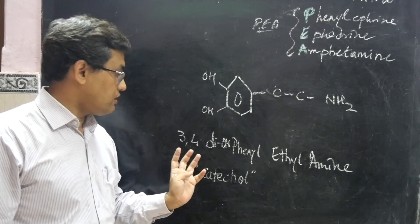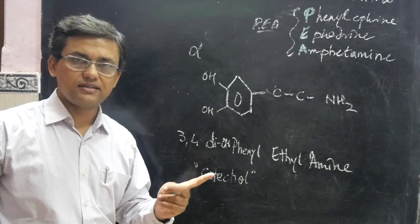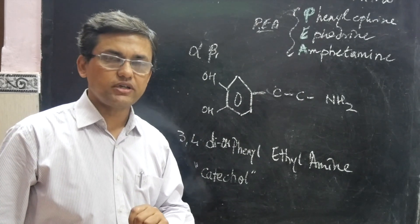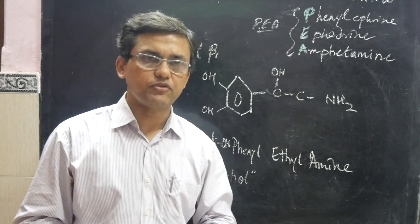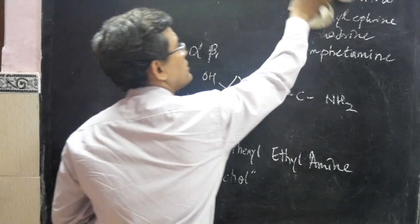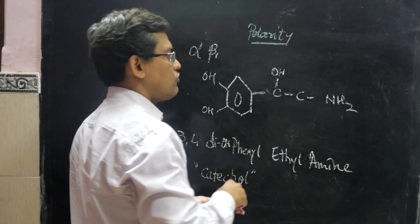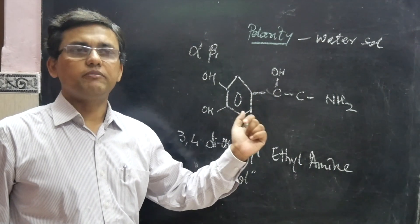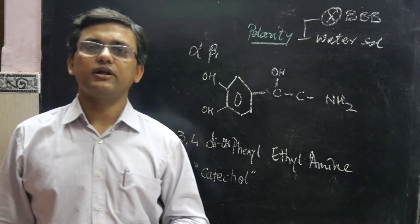The hydroxyl group imparts alpha activity and beta-1 activity to the molecule. There is another hydroxyl group as well, and wherever hydroxyl groups appear, they give polarity to the molecule. This polarity makes the molecule water-soluble. Because it becomes polar and water-soluble, it does not cross the blood-brain barrier — it is not lipid-soluble.